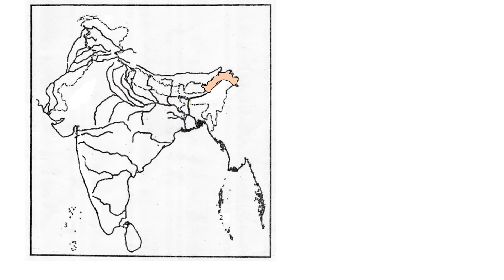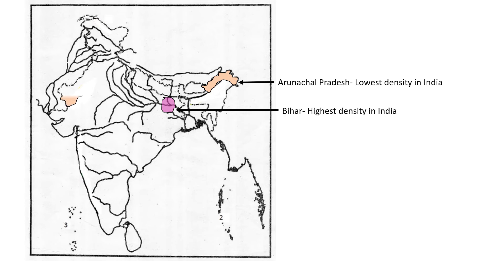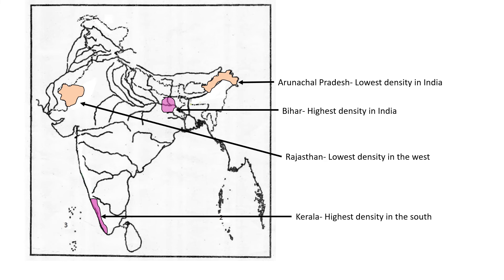Next we have to see the population density. Arunachal Pradesh has the lowest density in the entire country, whereas Bihar has the highest density. If the question asks for low density in the west, then it is Gujarat and Rajasthan. If it asks for high density in the south, then it is Kerala. Mostly this question comes from these only.